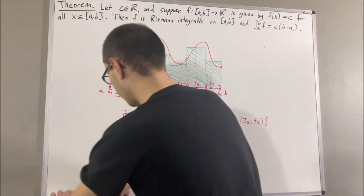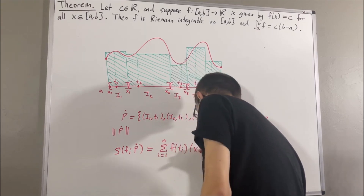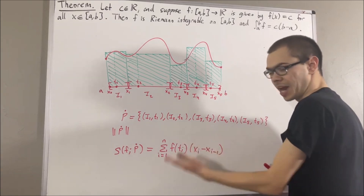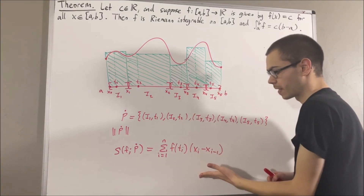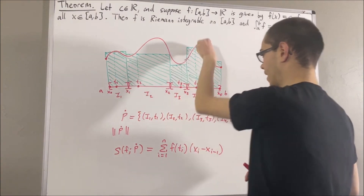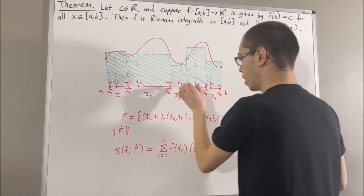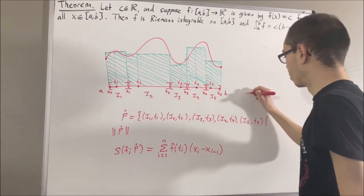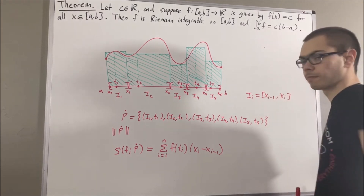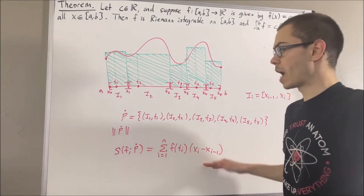We can symbolize the Riemann sum for a function for any tagged partition as follows. f(tᵢ) represents the output value of the function at each of the tags, and xᵢ minus xᵢ₋₁ represents the length of each subinterval. In general, a subinterval Iᵢ is given by [xᵢ₋₁, xᵢ].